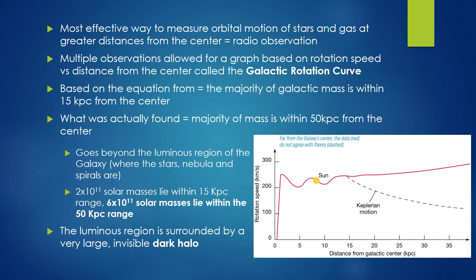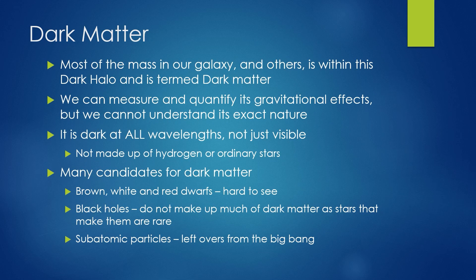Astronomers have determined that the luminous region of our galaxy is surrounded by an extensive invisible dark halo, but we have no idea what it's made of. Could the stellar mass be black holes? There's probably no way enough could have been created. Maybe it's brown dwarfs or faint white dwarfs and red dwarfs — currently the best star-like option. But what about subatomic particles? It could be, although we don't have evidence for it. This is now what we deem dark matter. We can measure and quantify its gravitational effects, but we cannot understand its exact nature. It is dark at all wavelengths, not just visible light, and it's not made up of hydrogen or ordinary stars. What we think dark matter is: brown, white, and red dwarfs, black holes, and subatomic particles left over from the big bang.